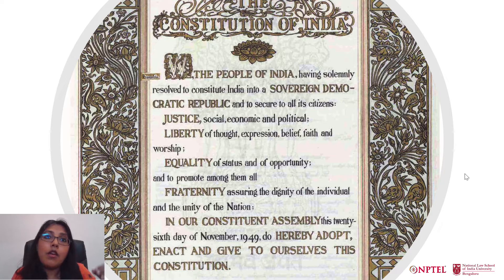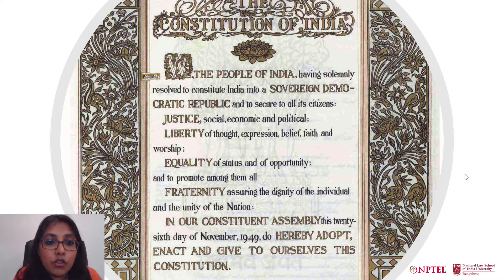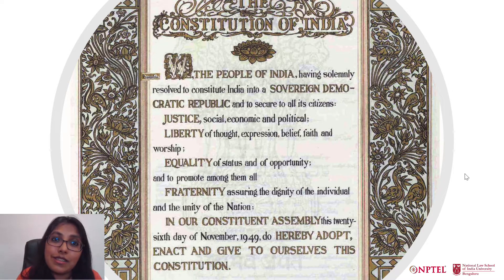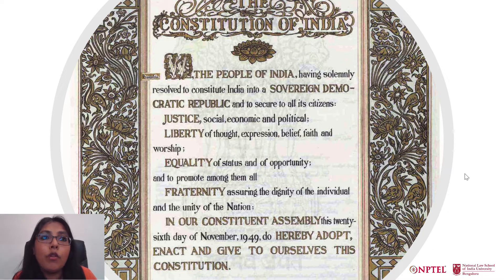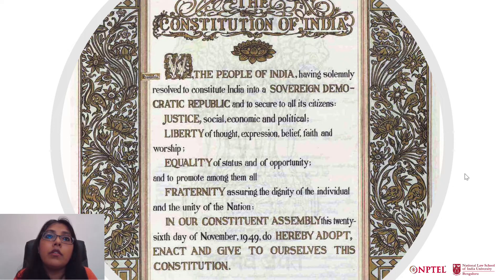This is very interesting because this is not something that constitutions until that time were supposed to be doing. Constitutions were supposed to create the charter for the state and provide a framework for organizing the state — not a framework for organizing society or providing a vision for social transformation. The Indian constitution made a break from previous constitutions in saying it should speak not only to the organization of the state, but also have a vision for the organization of society and the economy to provide for social, economic and political justice. This aspect of the Indian constitution went on to shape constitutions that came subsequently in other parts of the world — for example, the South African constitution was heavily inspired by this ideal.